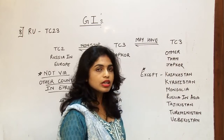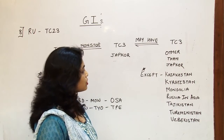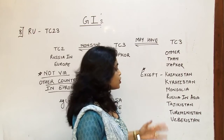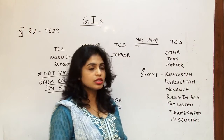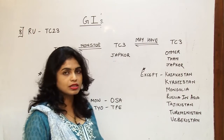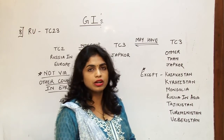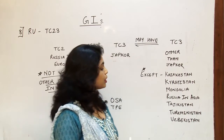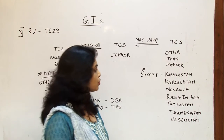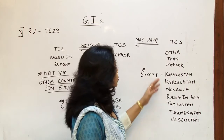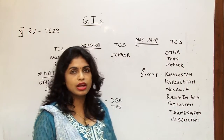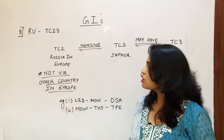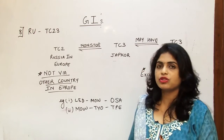After JAPCOR, the flight may continue to other TC3 countries, but with exceptions. The exceptional countries — which were formerly part of the Soviet Union — are Kazakhstan, Kyrgyzstan, Mongolia, Russia in Asia, Tajikistan, Turkmenistan, and Uzbekistan. These are now in South-East Asia but are excluded from the onward journey under RU.